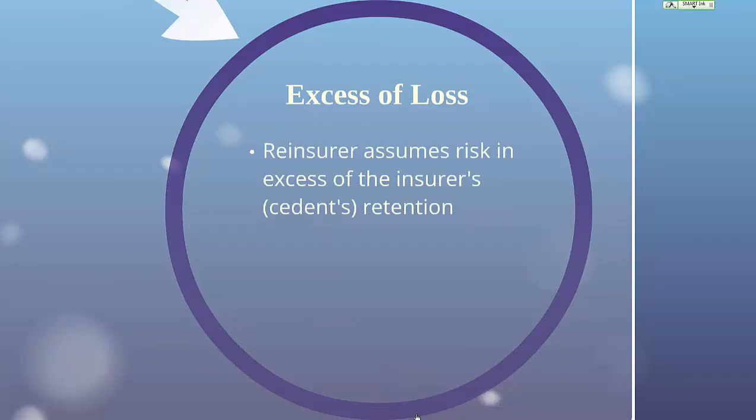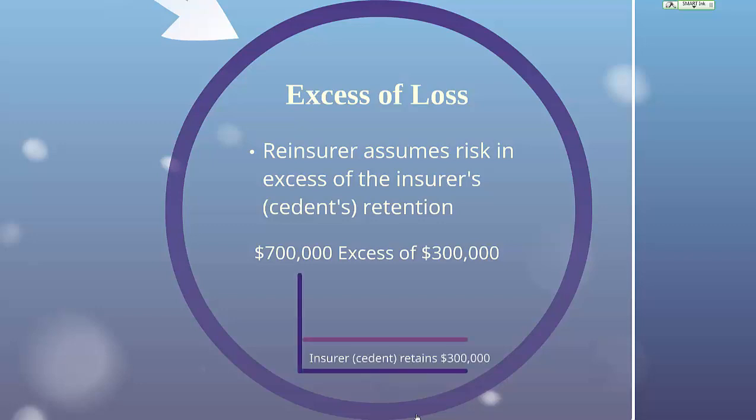Excess of loss is where the reinsurer assumes risk in excess of the cedent's retention — essentially, the retention is like a large deductible. For example, with a $700,000 excess of $300,000 reinsurance treaty, the cedent retains $300,000 and the reinsurer assumes anything excess of that. If the loss is $400,000, the cedent pays $300,000 and the reinsurer pays $100,000. If the loss is $800,000, the cedent pays $300,000 and the reinsurer pays $500,000. If the loss is $1,200,000, the reinsurer only pays $700,000 and the cedent pays the $500,000 difference.